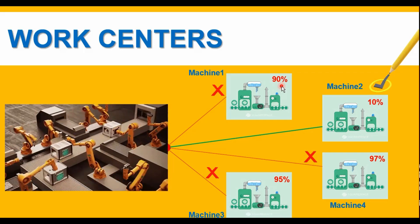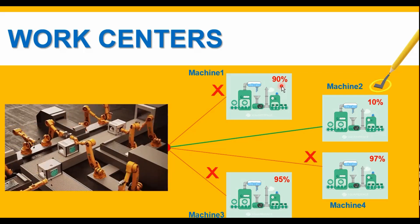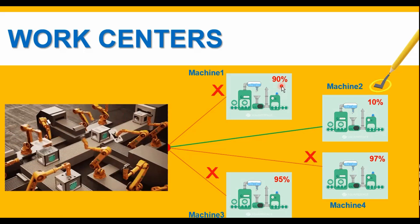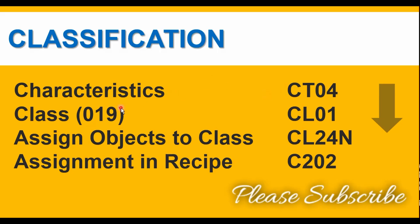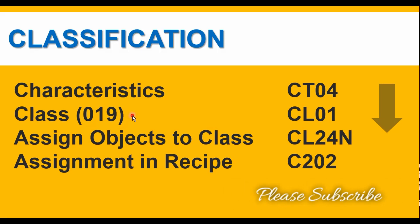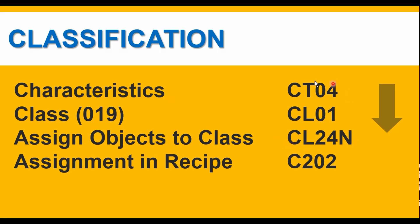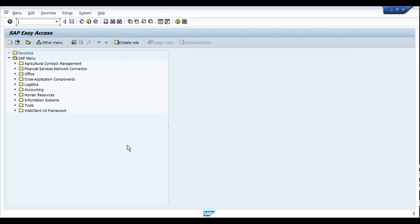Let's see how to classify the work centers and perform this activity while releasing the process order. To perform the classification we follow a few steps: first, creation of characteristics in transaction CT04; next, create a class with class type 019 — which is for work centers — in transaction CL01; then assign the objects to the class using the characteristics created earlier in transaction CL24N; and finally, once master data setup is complete, assign all the combinations into the recipe of the particular product.